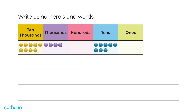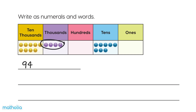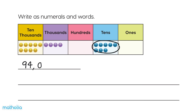Let's write the number represented in the place value chart as numerals and words. There are nine ten thousands, four thousands, no hundreds, eight tens, and no ones. The number represented in the place value chart is 94,080.